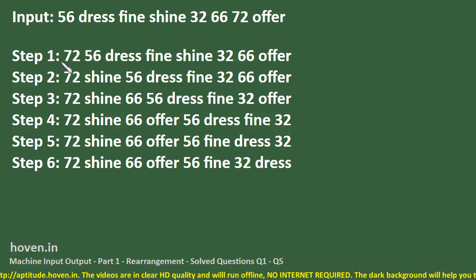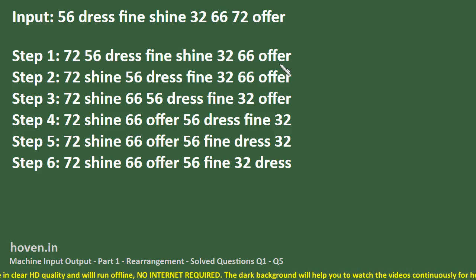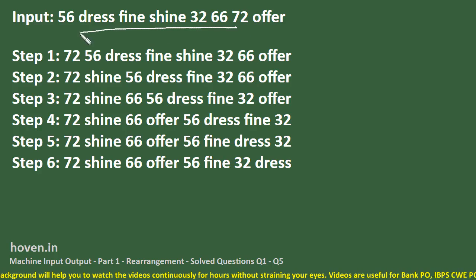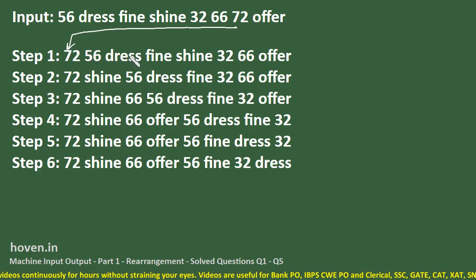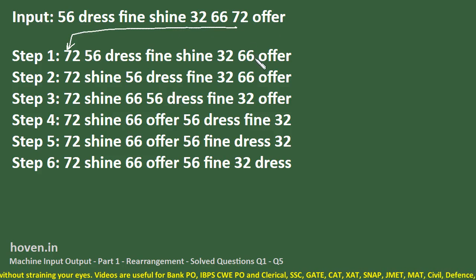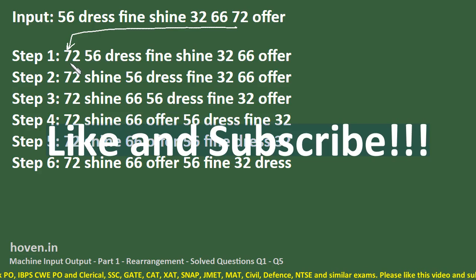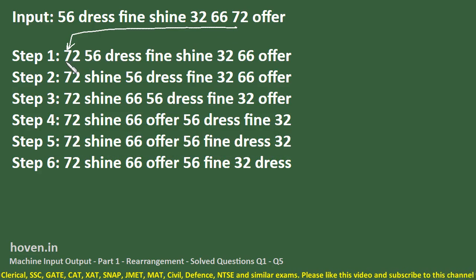Let us see the first step: 72, 56, dress, fine, shine, 32, 66, offer. If we observe this step, we can see that out of the numbers present in the first given input, the largest number has moved to the leftmost side. There is no other change — 56, dress, fine, the sequence is the same. But 72, which was after 66, moves to the front of the whole line.